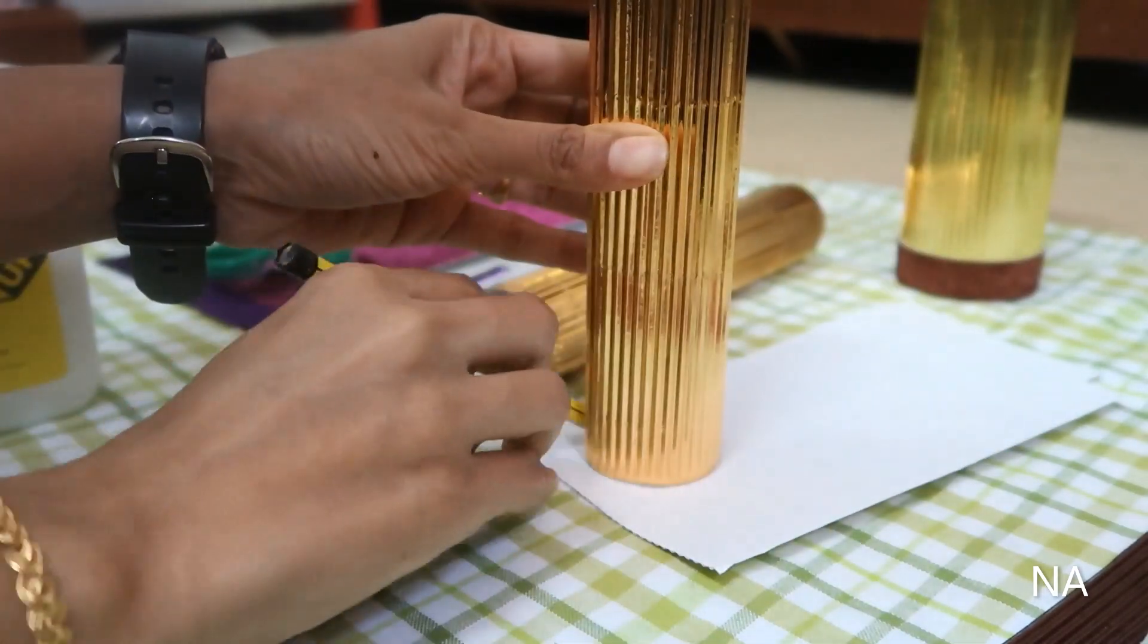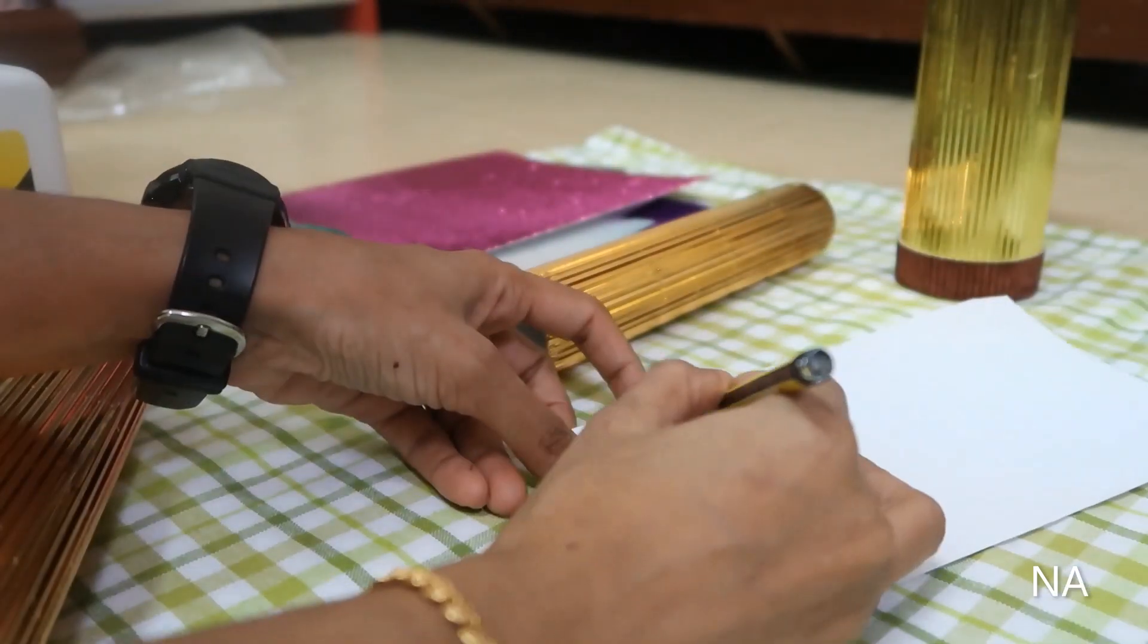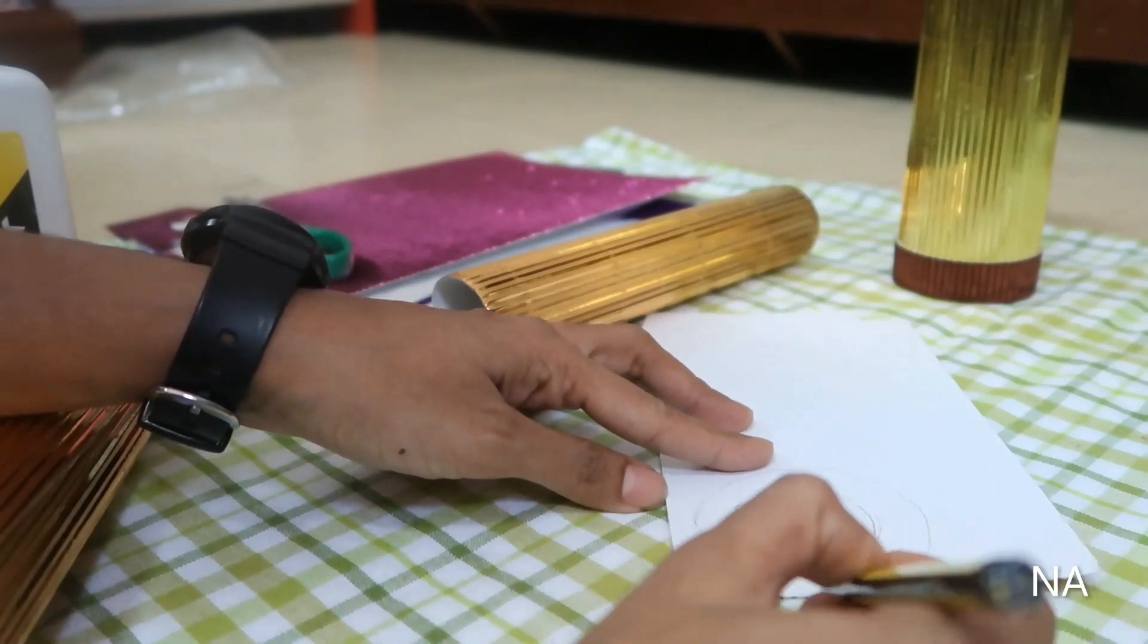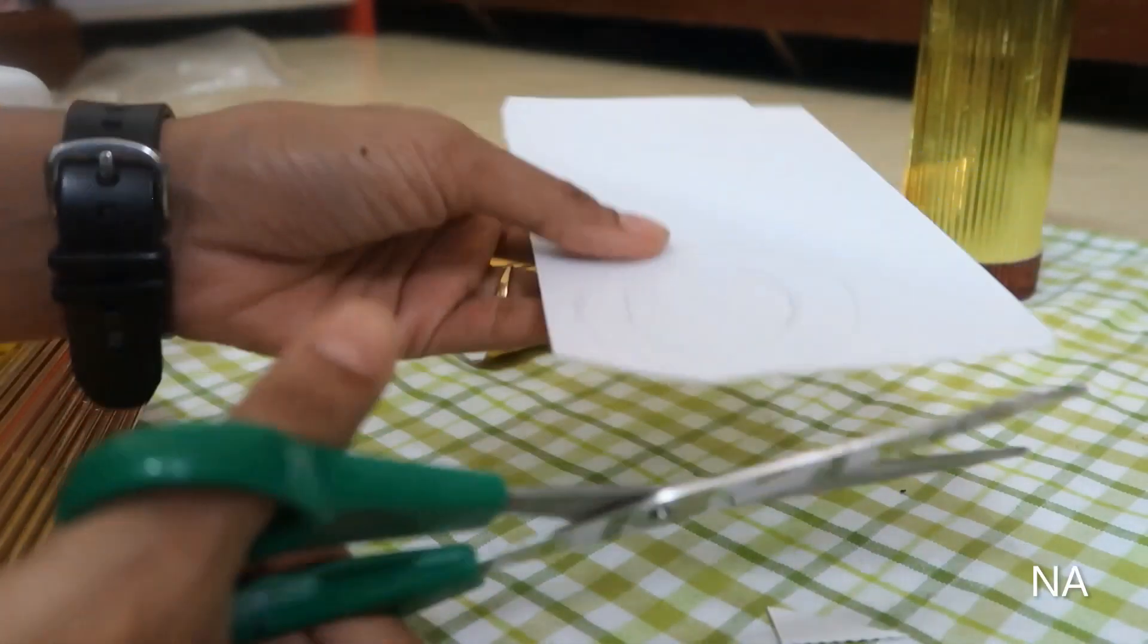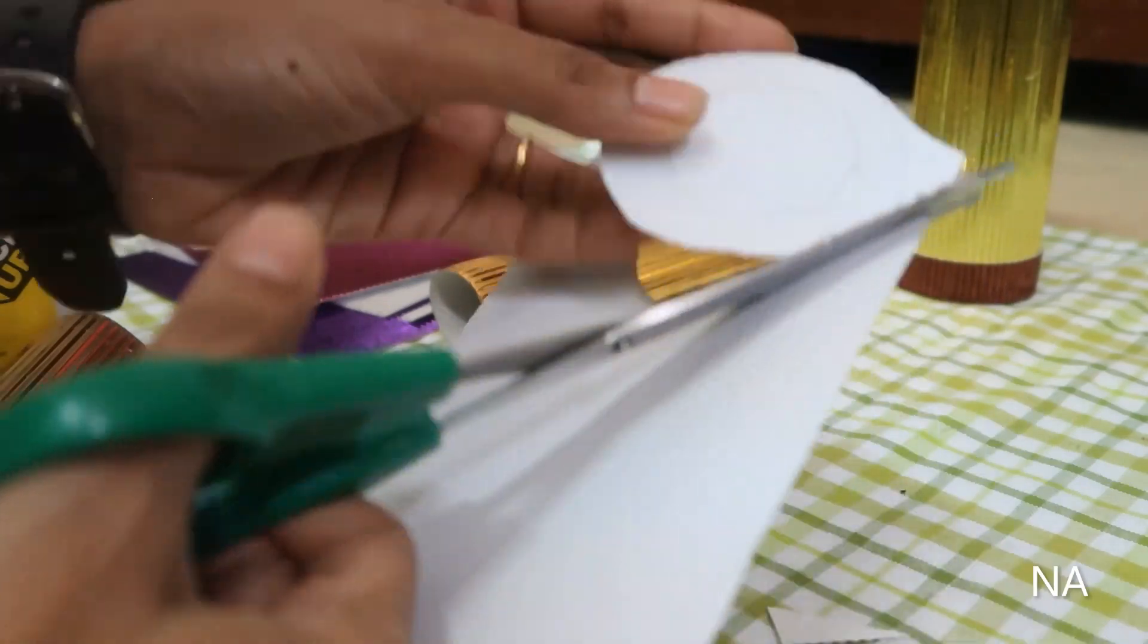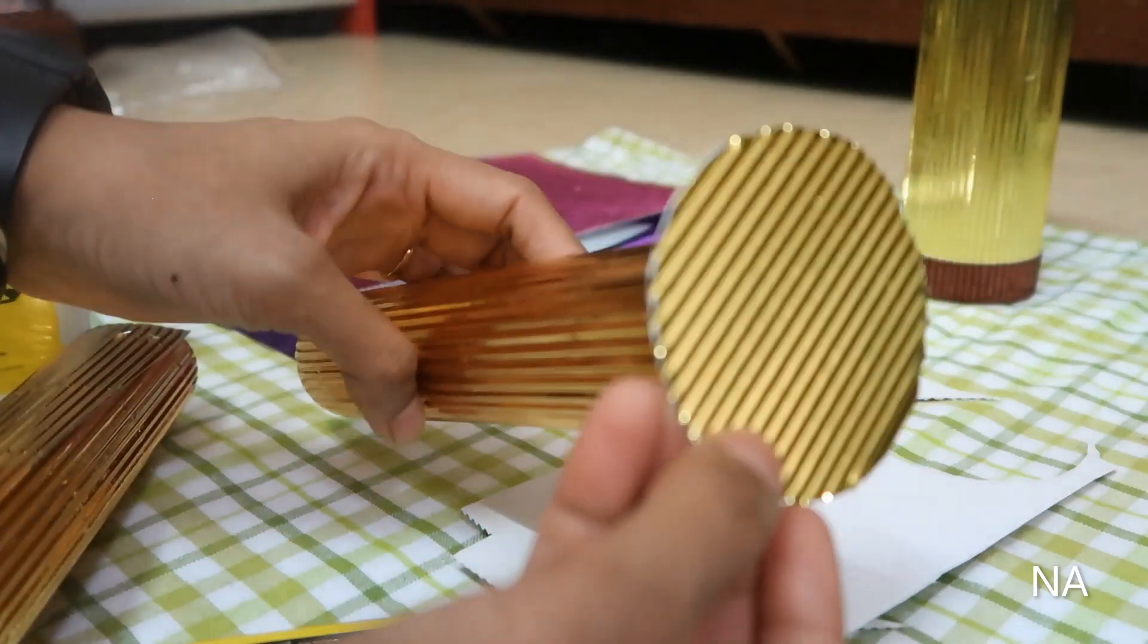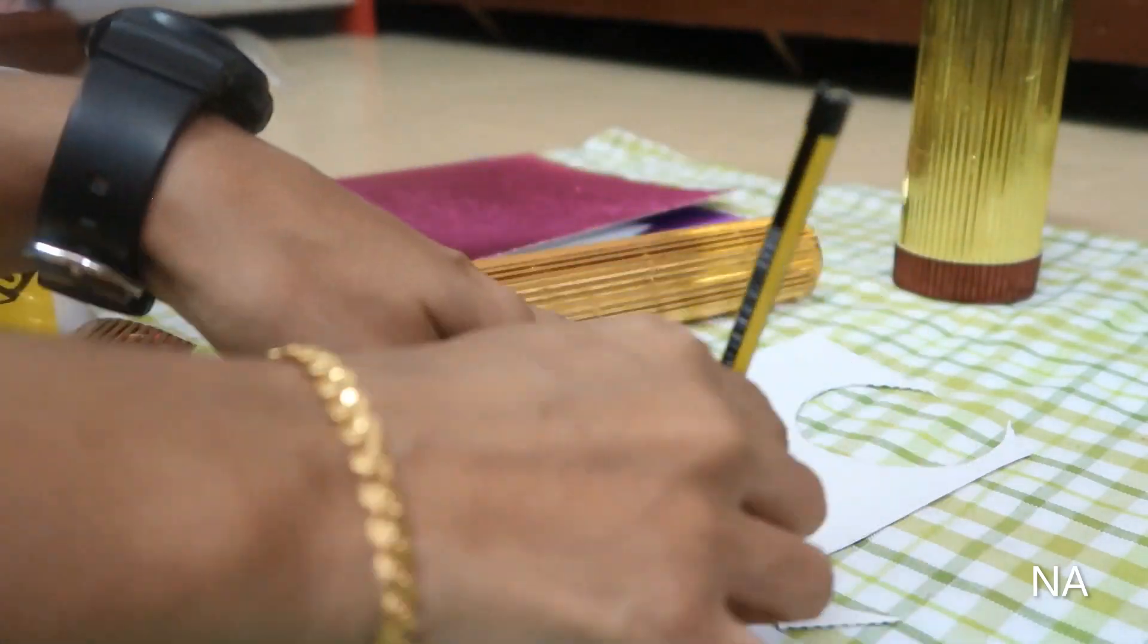Next, just the same process for the top part: trace out the circle, draw a rough outer circle and cut it out. We need two similar size circles.